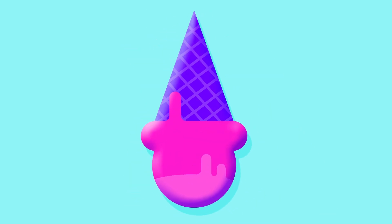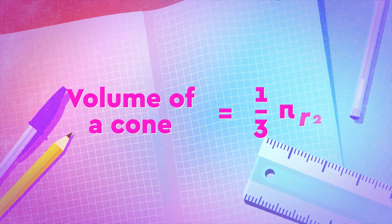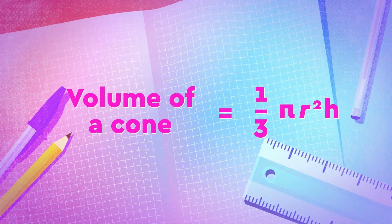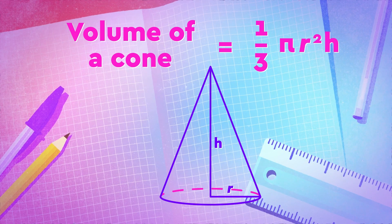A cone is a shape that tapers from a circular base up to a point — exactly what you would expect if you thought of an ice cream cone without the ice cream, turned upside down. Since the cone starts from a circular base, pi is again involved. The volume of a cone is calculated as one-third pi r squared times the height of the cone, where r is the radius of the base and h is the perpendicular height from the base to the top.